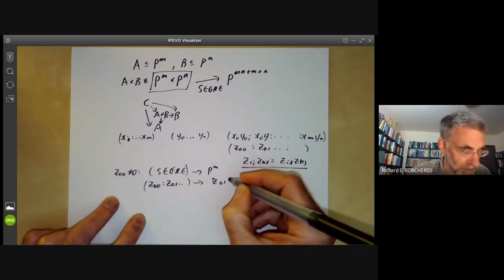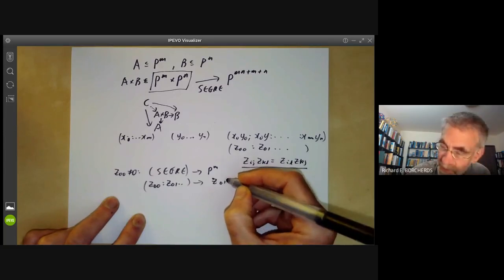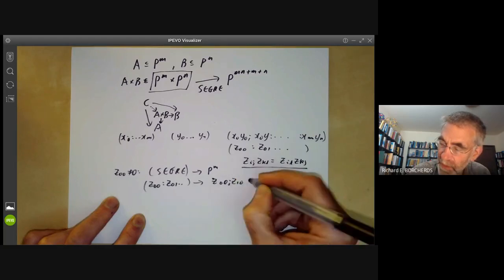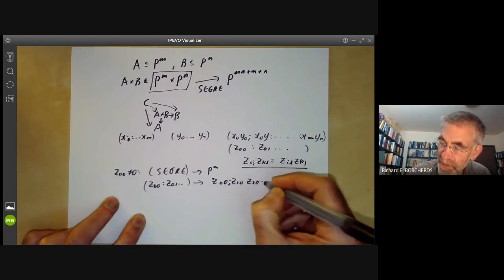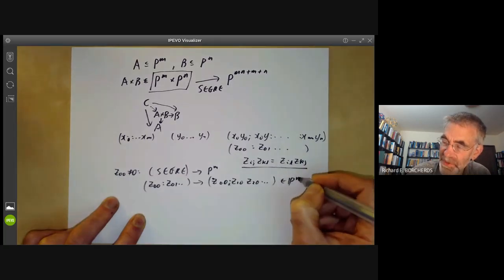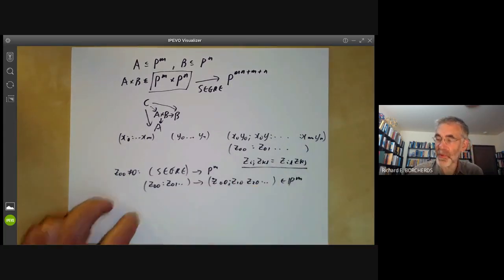Z1,0, Z2,0 and so on. So this will be a point of P to the M, which is well-defined because Z0,0 is non-zero.